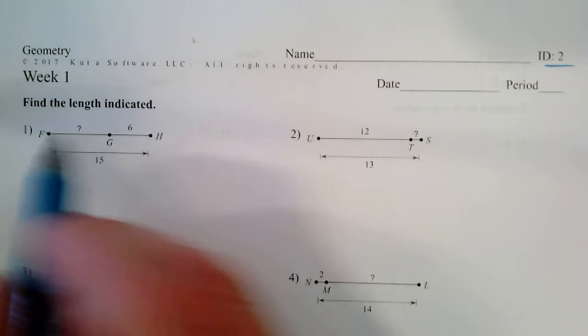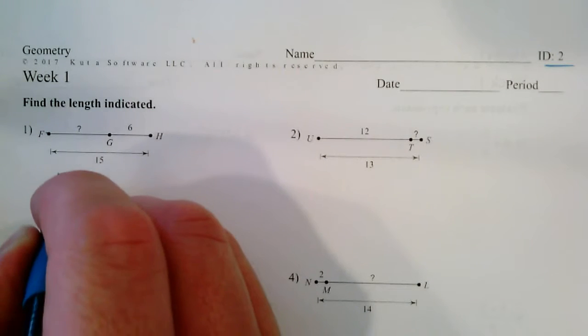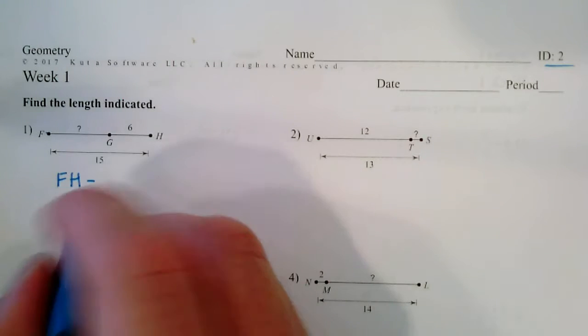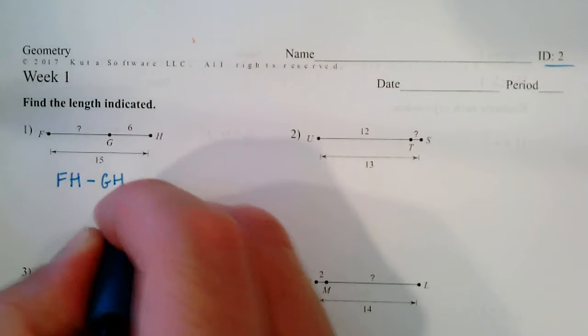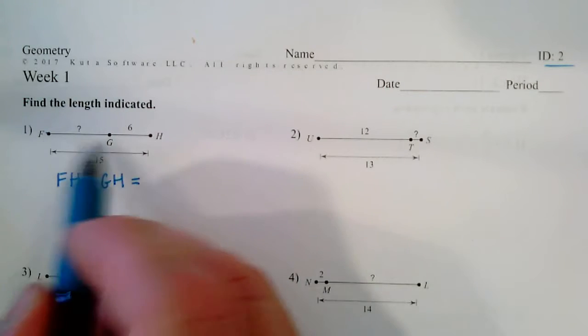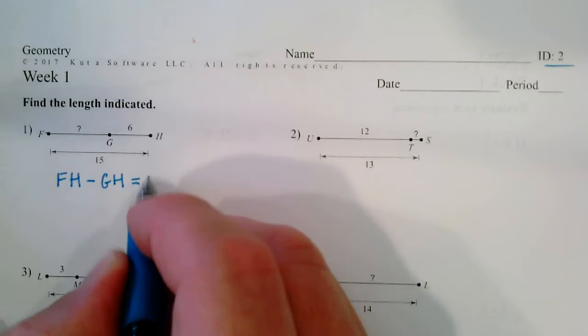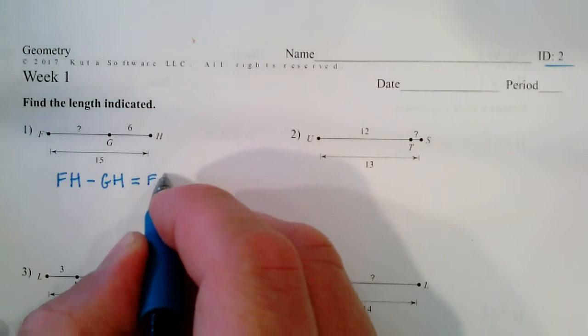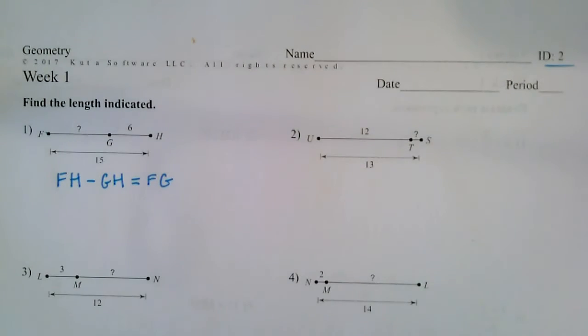We have FH take away GH equals FG, the thing we're trying to find. So it's the whole minus the part equals the other part.